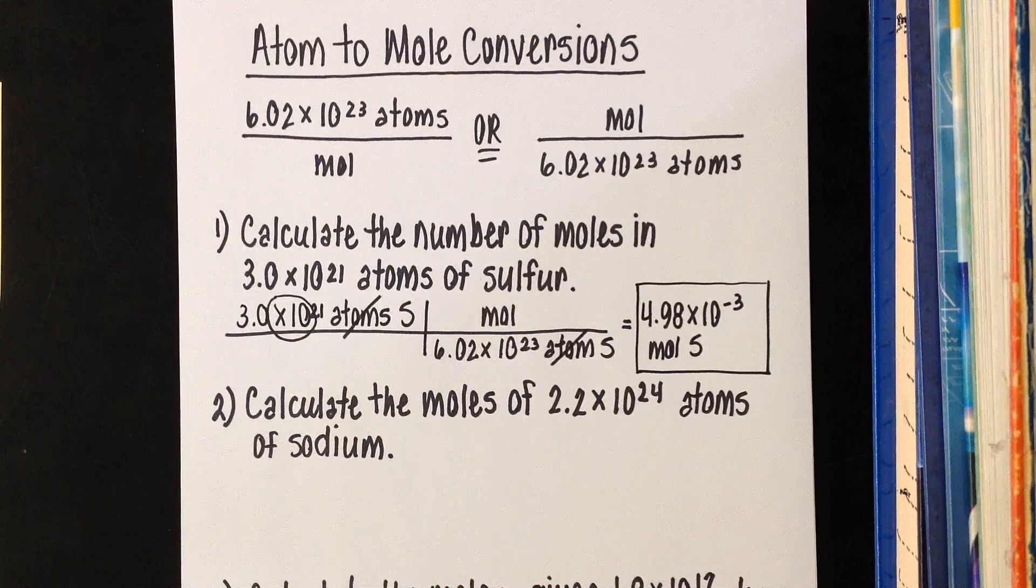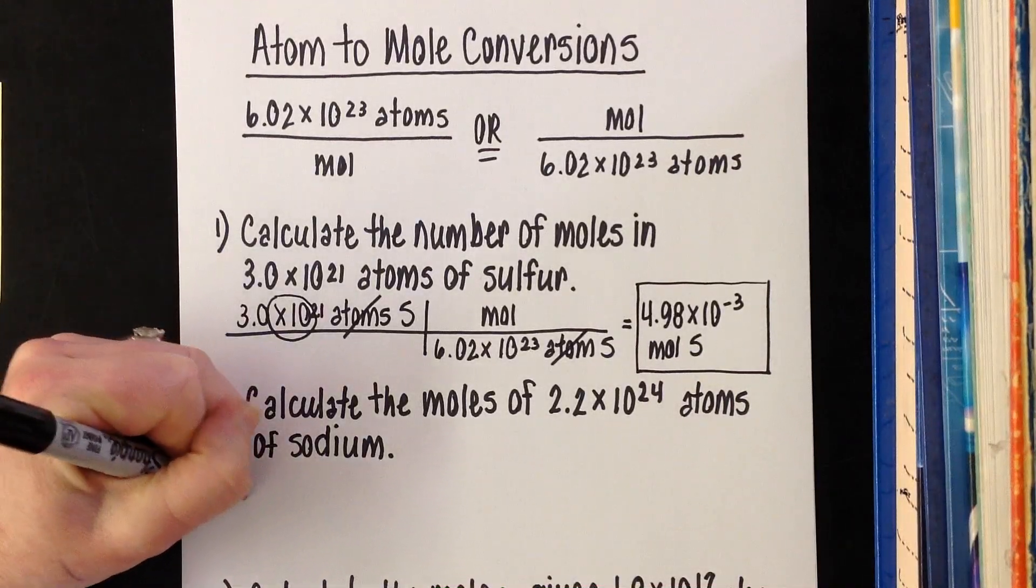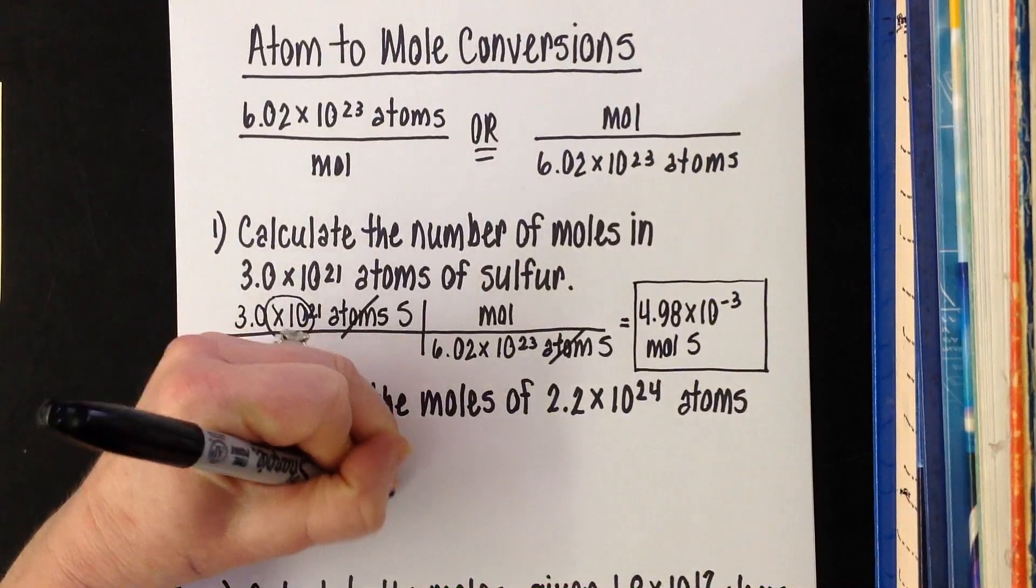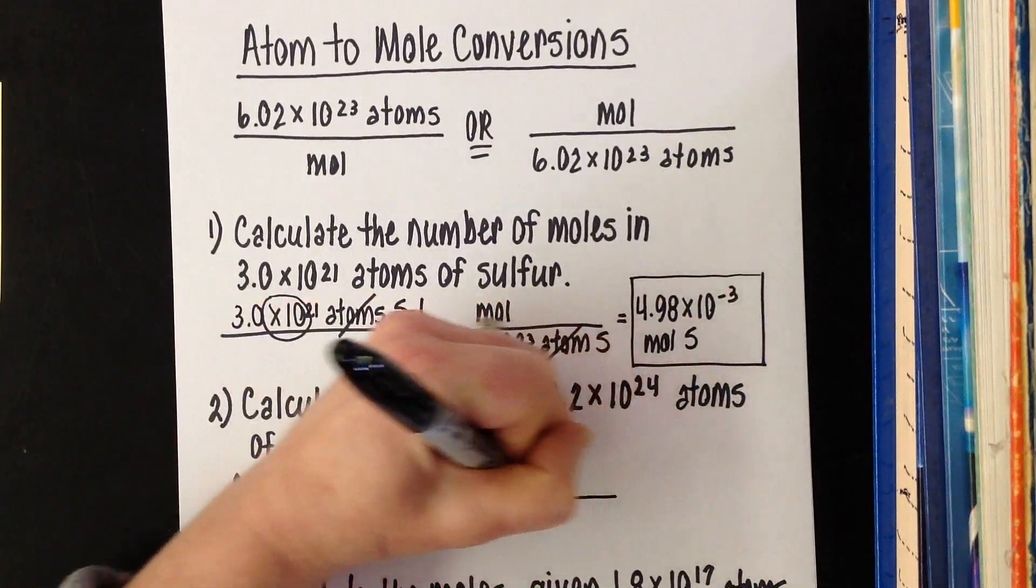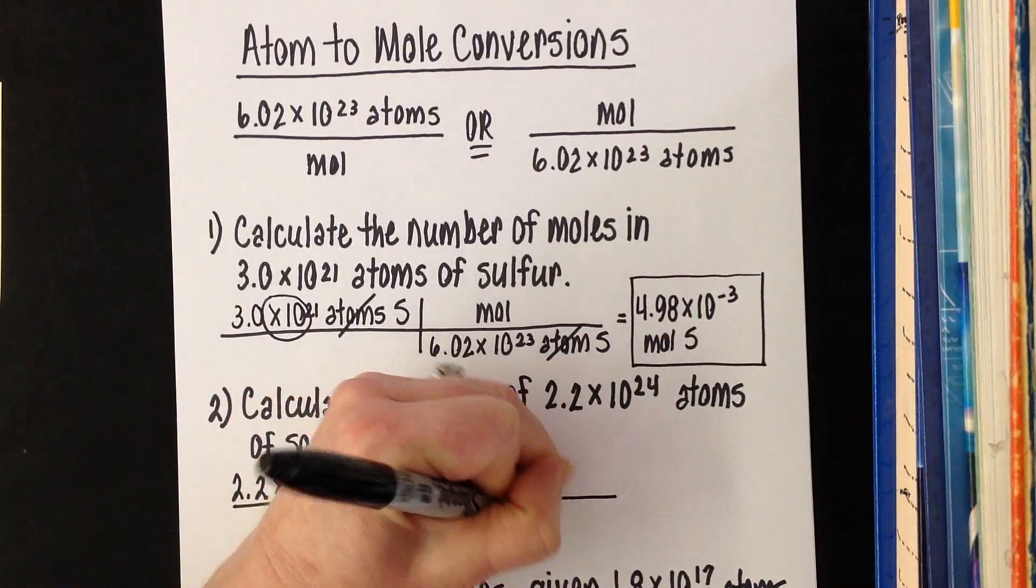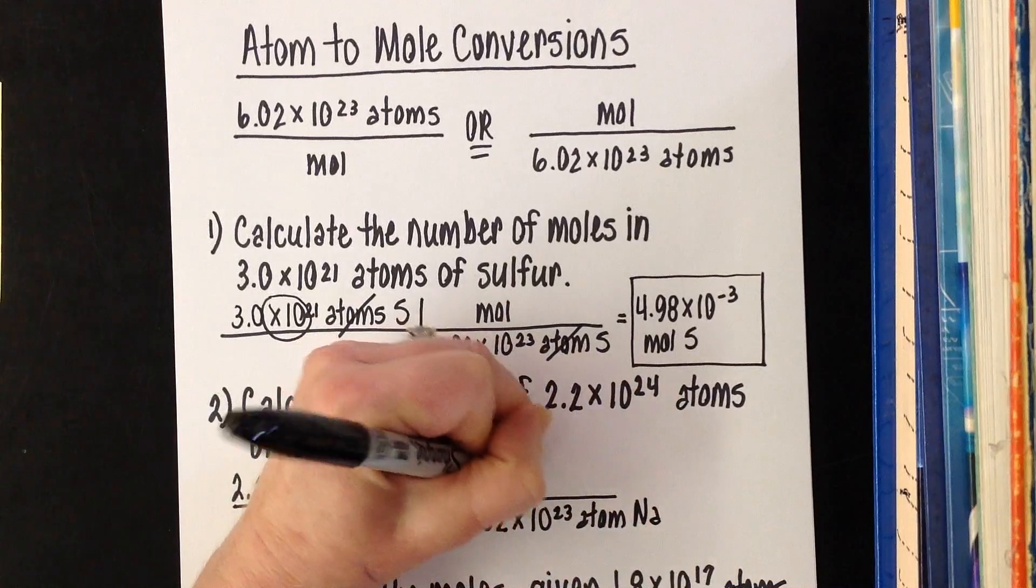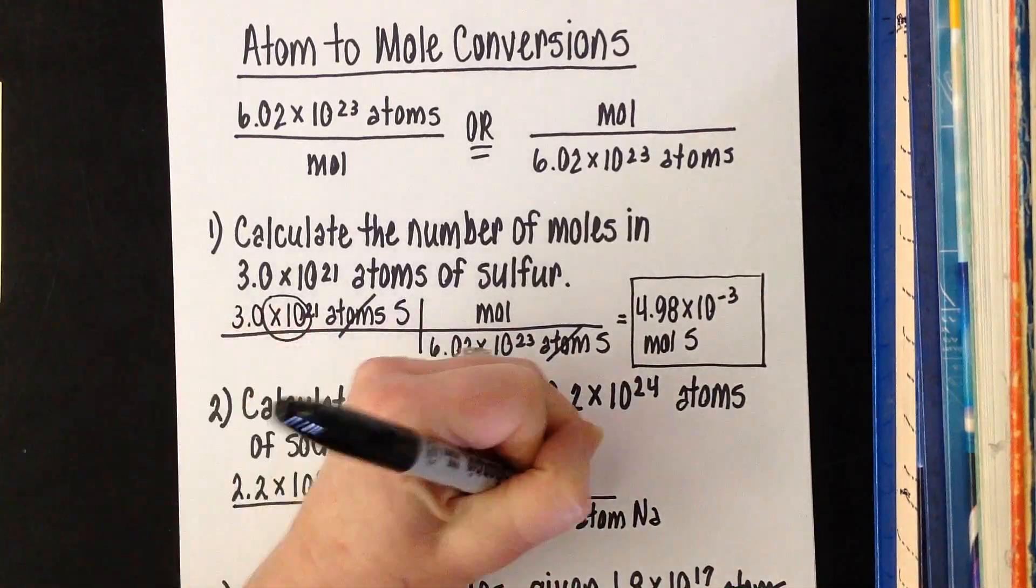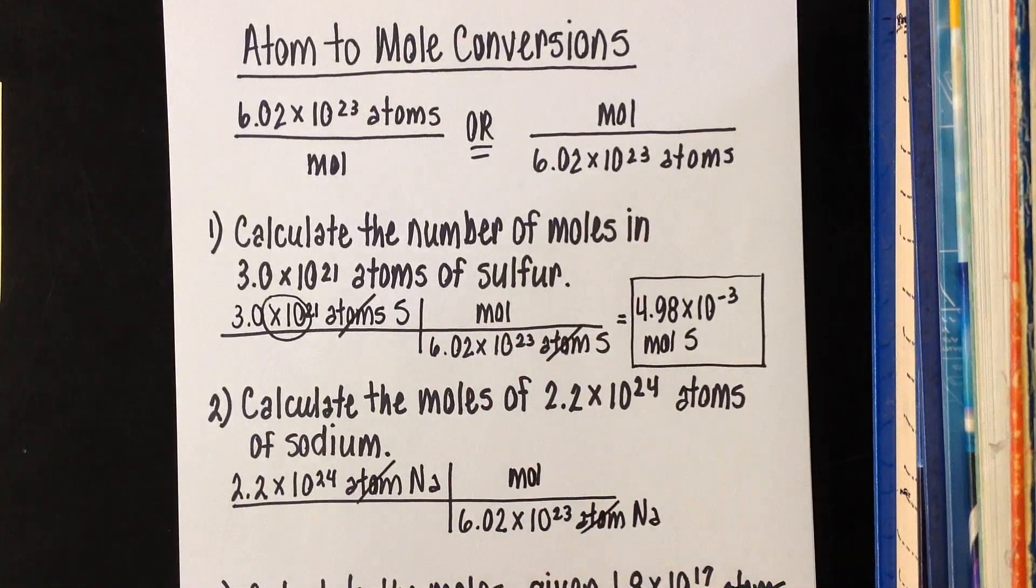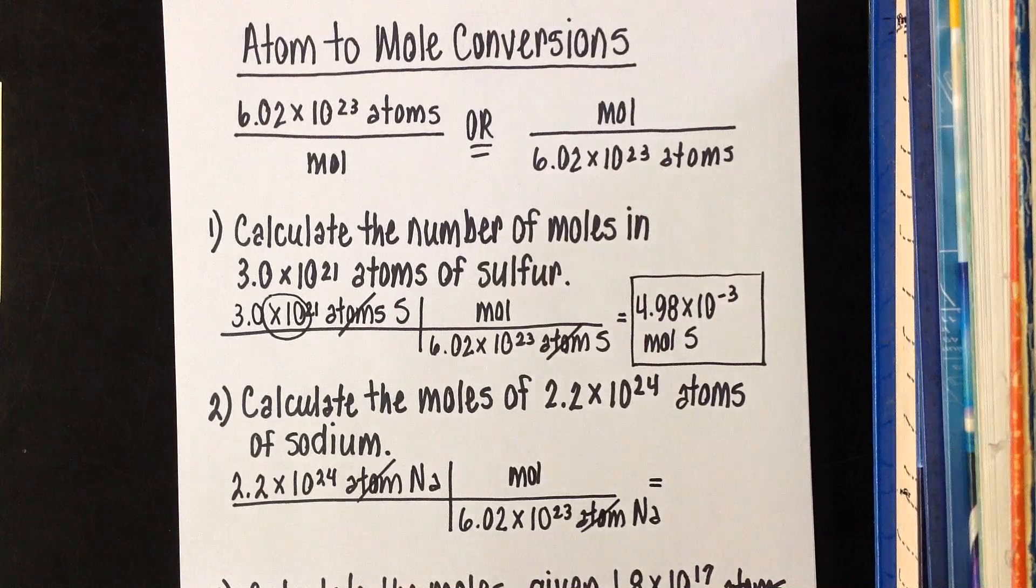Let's look at number two. We have 2.2 times 10 to the 24th atoms of sodium, and they want to know how many moles that is. So we're going to write 2.2 times 10 to the 24th atoms of sodium, long line, short line. We know there are 6.02 times 10 to the 23rd atoms of anything, in this case sodium, per mole. This went on the bottom because atoms cancel. You're going to divide those two numbers, and you're going to get 3.65 moles of sodium.